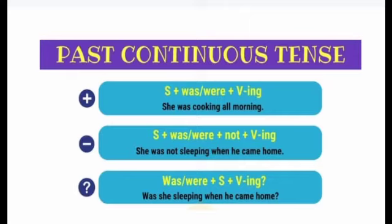اب negative sentences کا formula دیکھ لیتے ہیں۔ سب سے پہلے subject آئے گا، پھر was یا were میں سے کوئی ایک — یہ helping verb ہے۔ ان کے بعد not استعمال ہوگا، پھر verb کی first form plus ing، اور پھر object۔